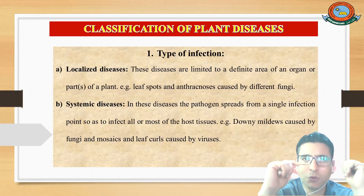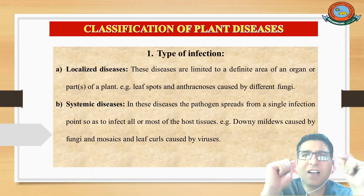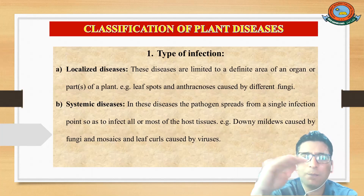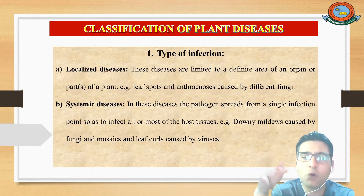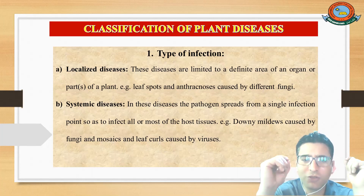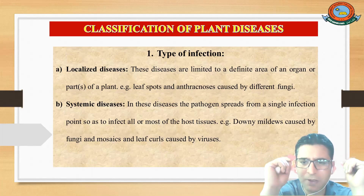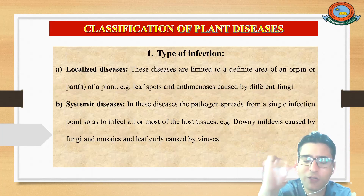The second type is systemic disease. In this type of disease, the pathogen, although it starts from a single infection point, later on infects all or most of the host tissues. For example, a fungal disease called downy mildew is a type of systemic disease.